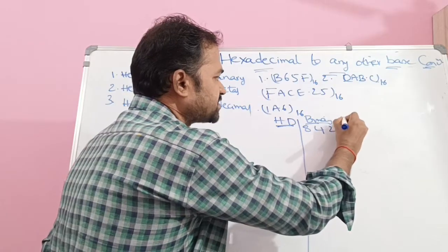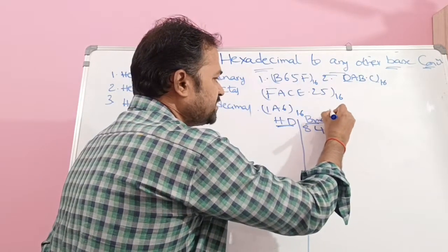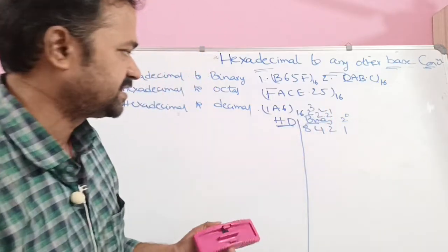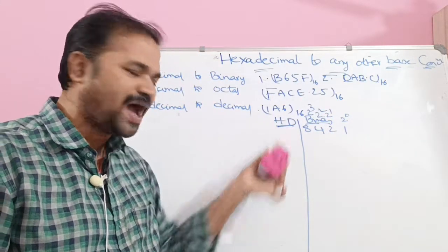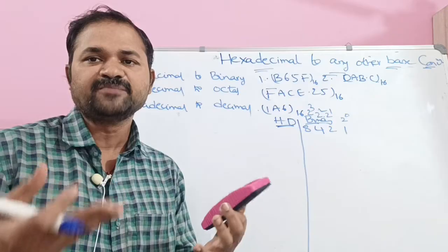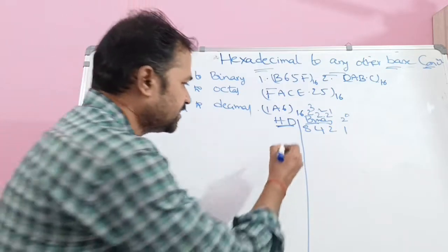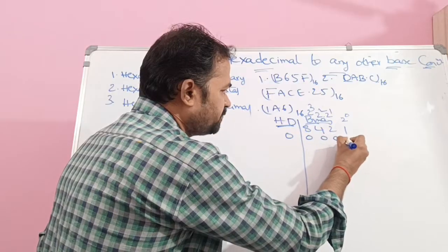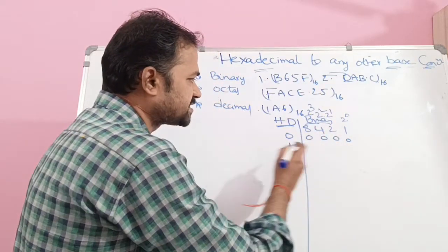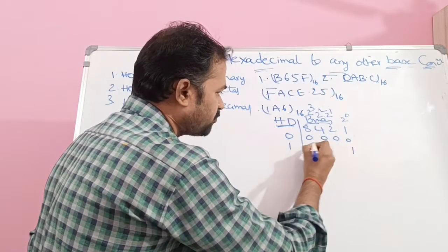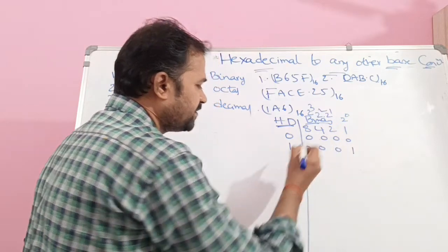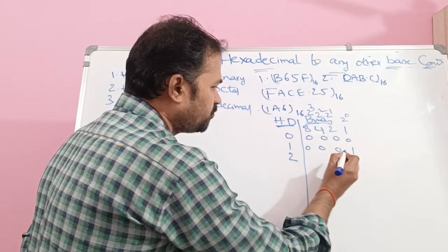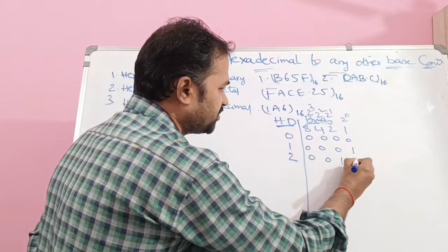In 8421 notation: 1 means 2 power 0, 2 means 2 power 1, 4 means 2 power 2, and 8 means 2 power 3. So 0 in hex is all zeros. For 1, we place 1 in the 1-position, remaining positions are 0. For 2, we place 1 in the 2-position, remaining positions are 0.